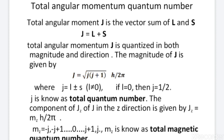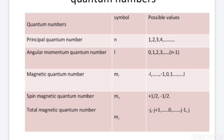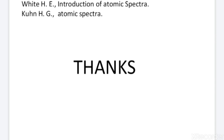In this table, we can see all the quantum numbers at a glance: principal quantum number, angular momentum quantum number, magnetic quantum number, spin quantum number, and total magnetic quantum number. All the angular momenta of the electron as well as their projections in the direction of the magnetic field are quantized — this is the gist of the Vector Atom Model. Thanks.